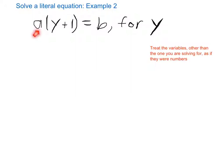So if a were a number here, that's the first thing I would want to get rid of. So I'm going to get rid of that, effectively, by dividing both sides by a. So now I have y plus 1 is equal to b over a.